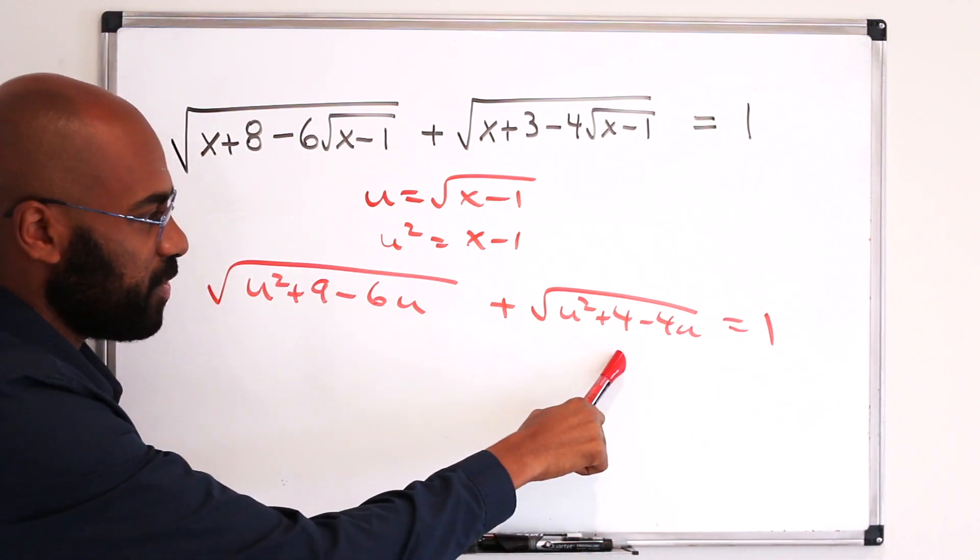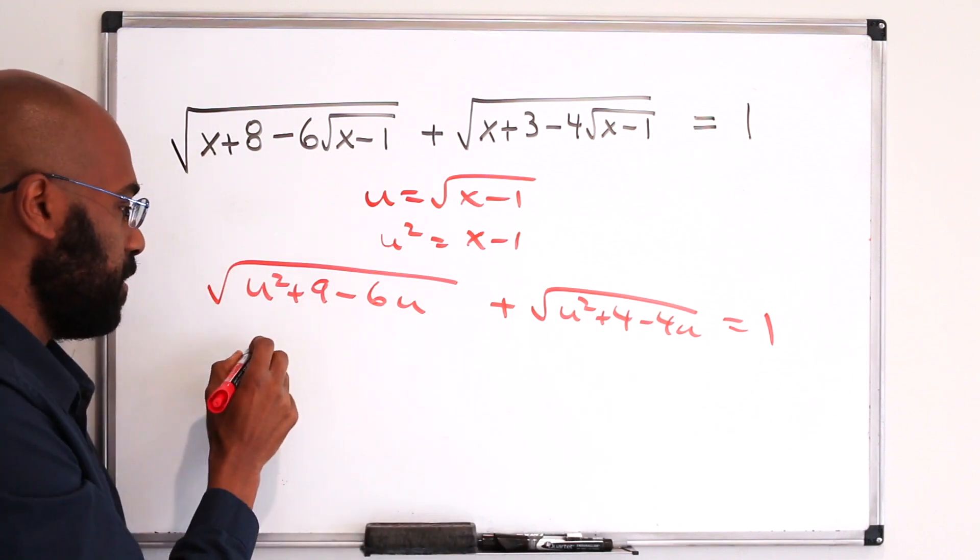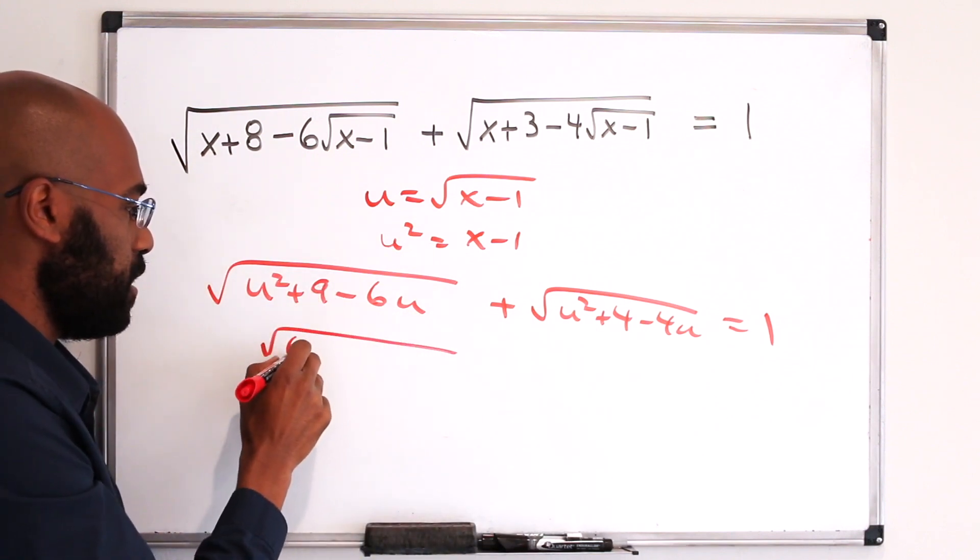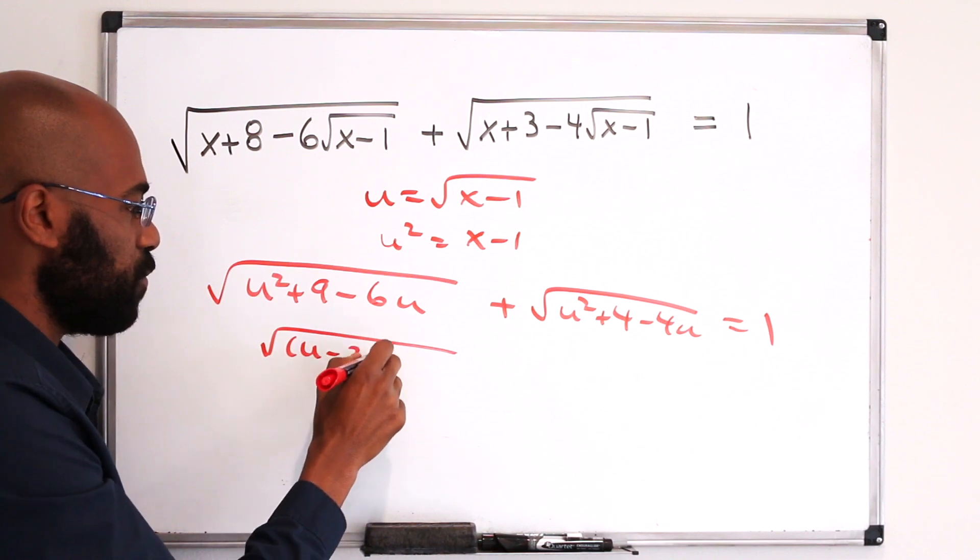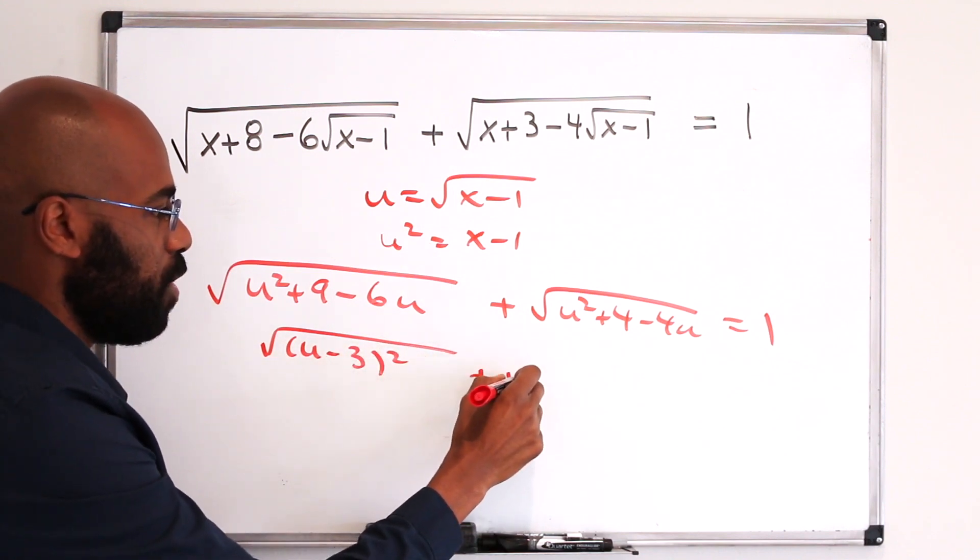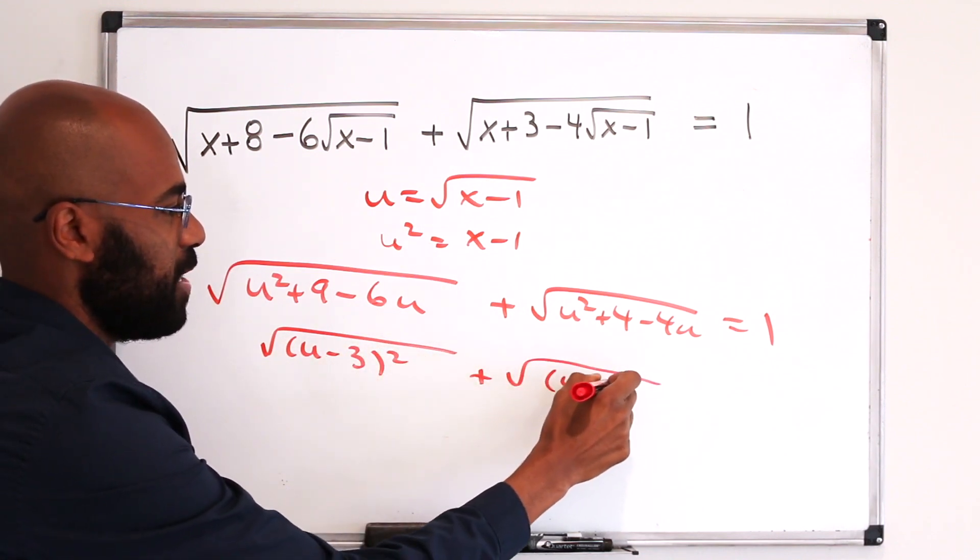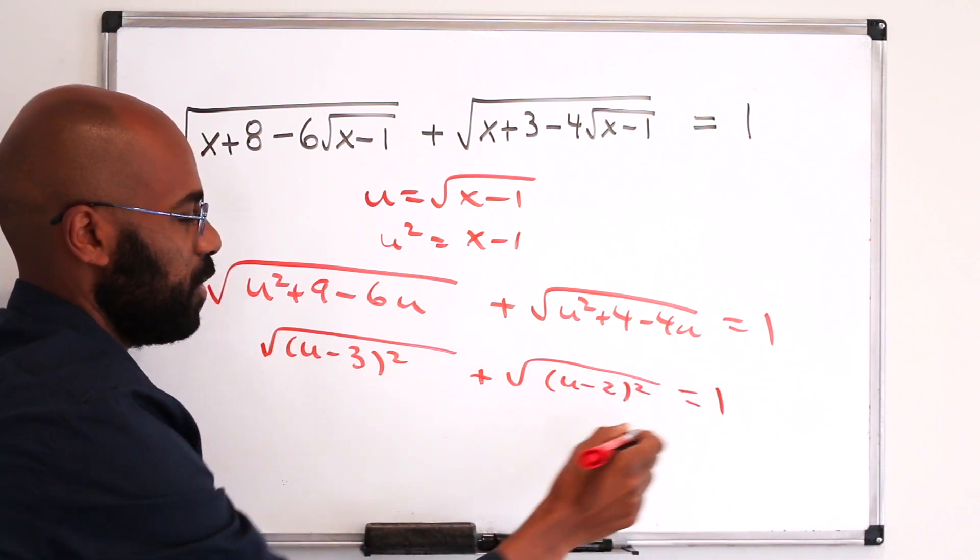Alright, so we might notice that we have perfect squares inside of here. Here, we have the quantity u minus 3 squared. And here, we have the quantity u minus 2 squared. And we're equaling 1 here.